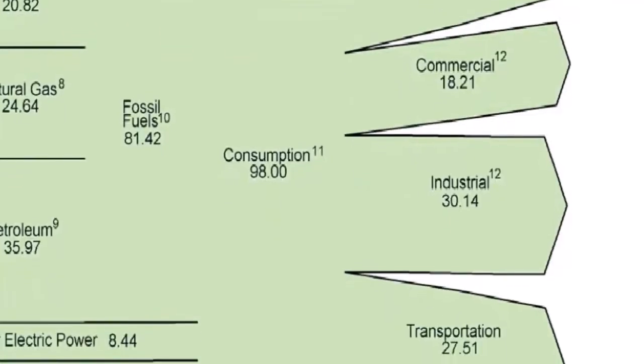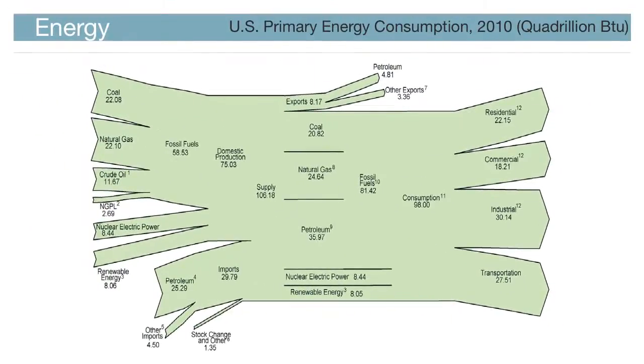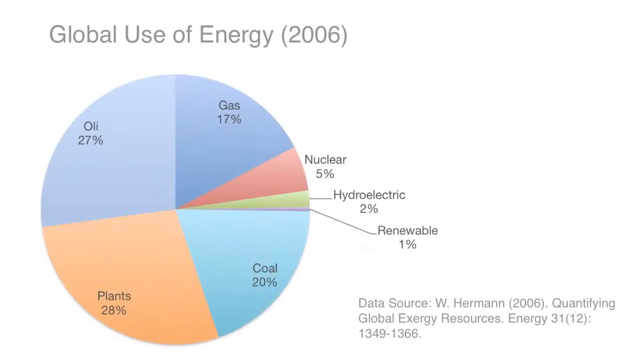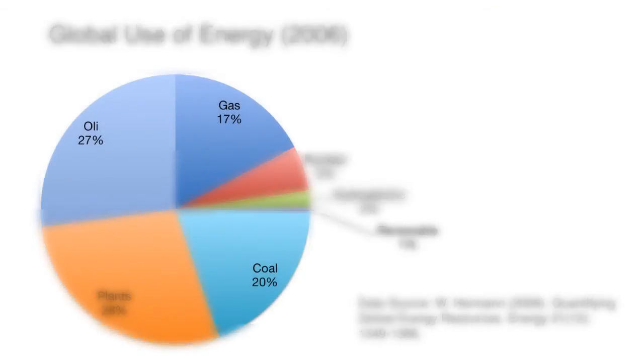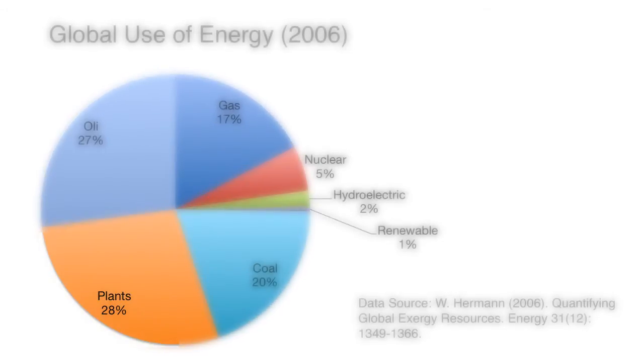The remaining is used for commerce, industry, and transportation. The global picture is slightly different, with about 65% of the use being in the form of fossil fuels. The next largest energy resource is plants at 28%.